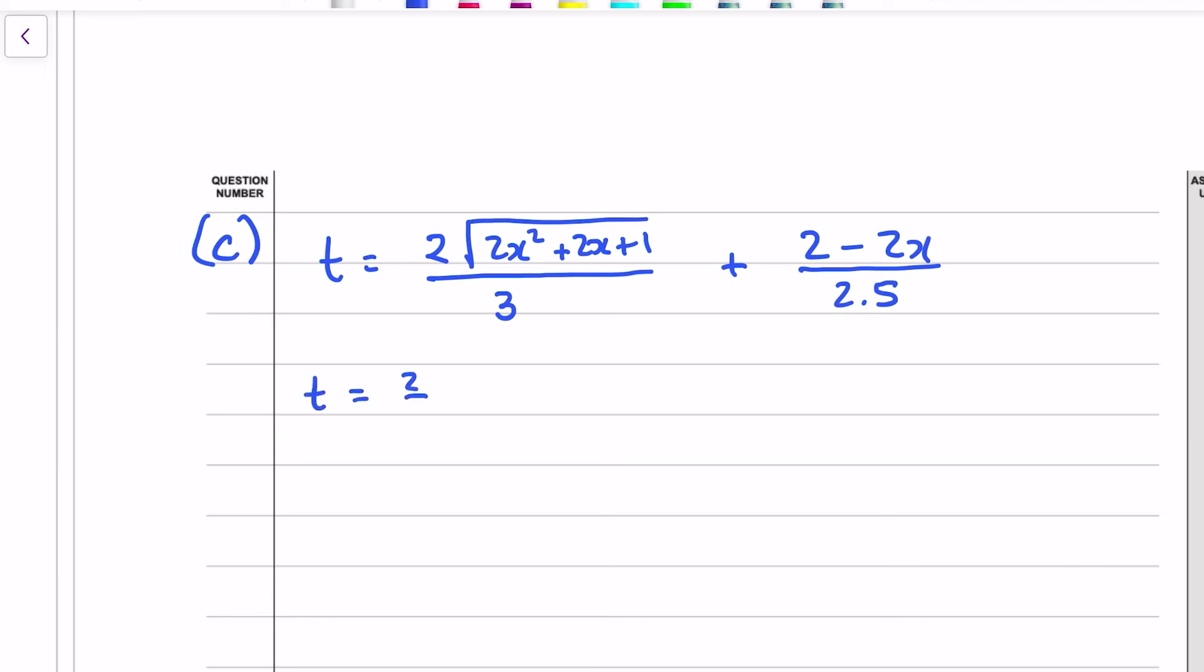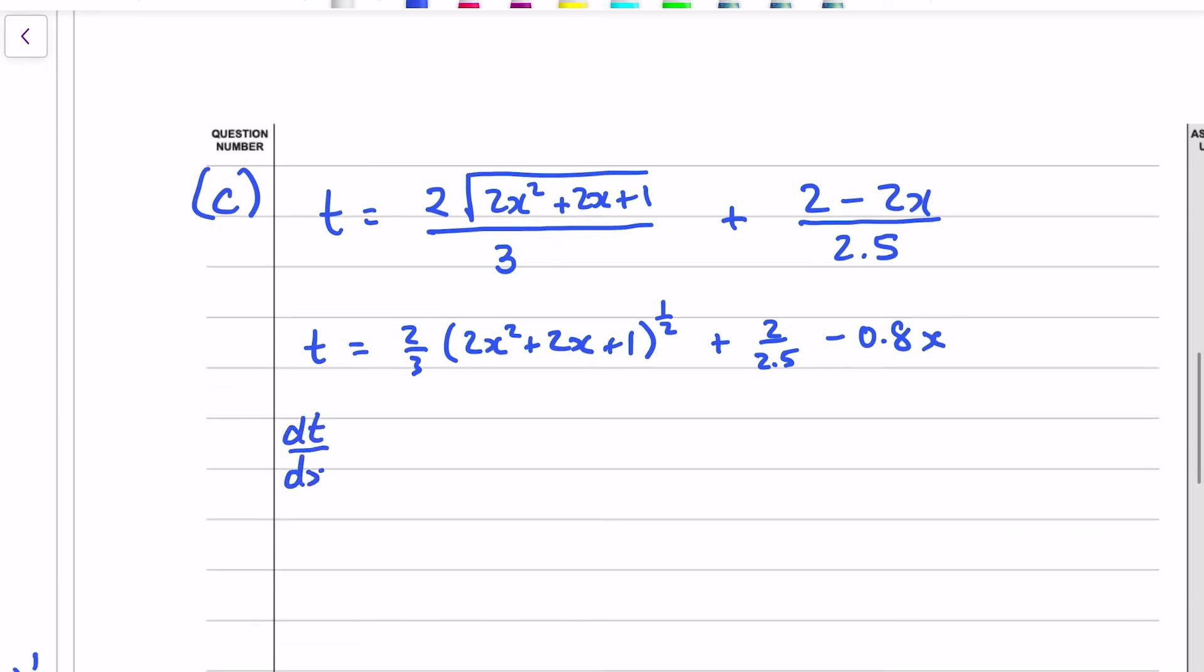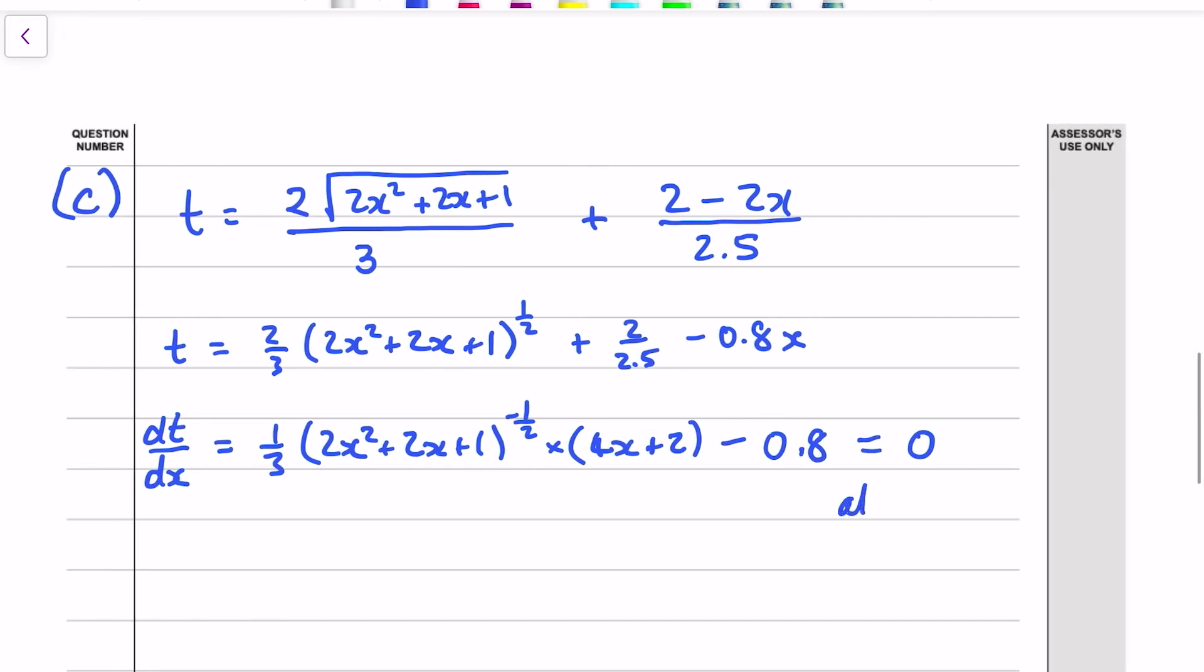So I'll just tidy this up first. I've got 2 thirds 2X squared plus 2X plus 1 all to the half and then I've got 2 divided by 2.5 and I've got minus 2 divided by 2.5 which is 0.8 minus 0.8X. If I differ dt dx, half comes down the front times this by the 2 thirds to give a third, power drops to minus a half and I times by the inner function differentiated 4X plus 2. That's the first term differentiated, the 2 over 2.5 is a constant so that disappears and the last term minus 0.8X differs to minus 0.8 and that equals 0 at a stationary point.